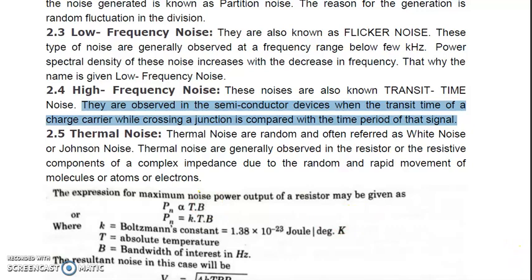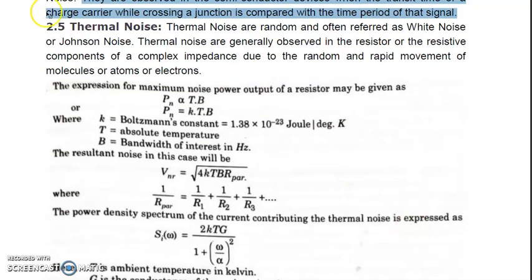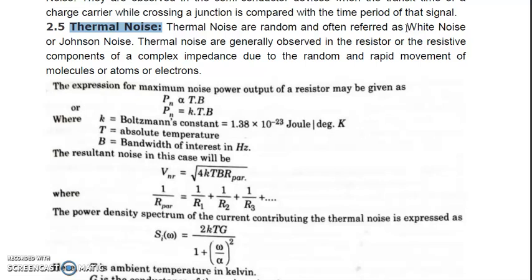The most important internal noise is known as thermal noise, also called white noise or Johnson noise. It is called white noise because it contains all frequencies — just as white color is composed of all colors. Thermal noise is random and can be characterized at all frequencies. It is generally observed in resistors or resistive components of a complex impedance.